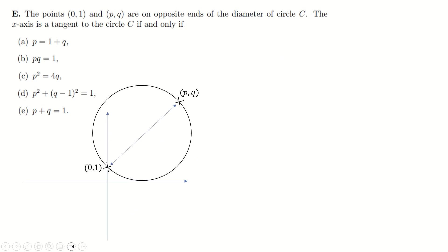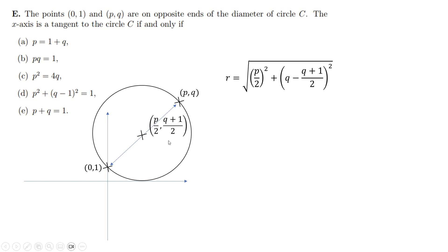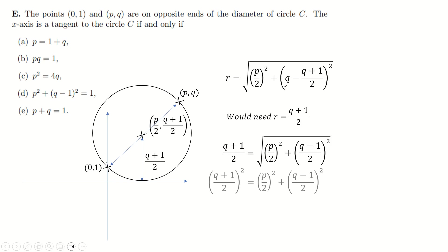For part E, draw the picture: you've got a circle going through (0,1) and (P, Q), and this circle is tangent to the x-axis. The center is at (P/2, (Q+1)/2). The radius is found by Pythagoras. But if the circle touches the x-axis, that distance also equals the radius, which is (Q+1)/2. So I set these equal, square both sides, multiply by 4 while expanding — lots of things cancel and you get down to the condition they give you. Quite a nice question.